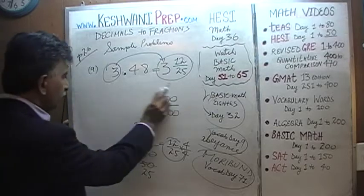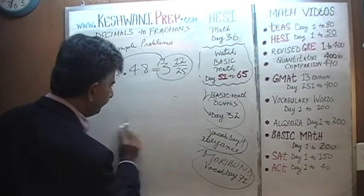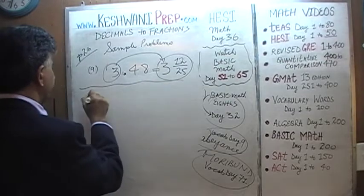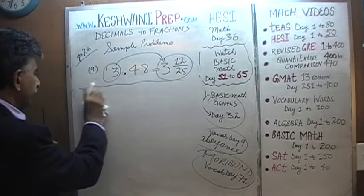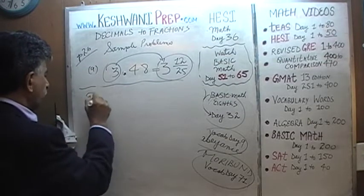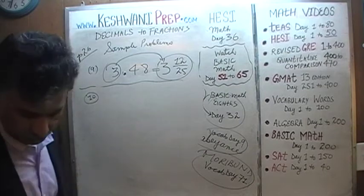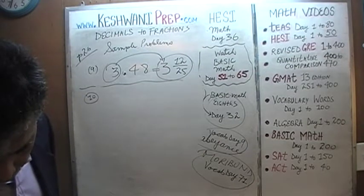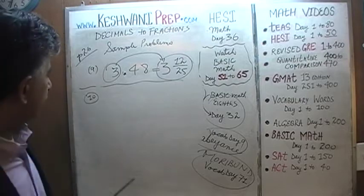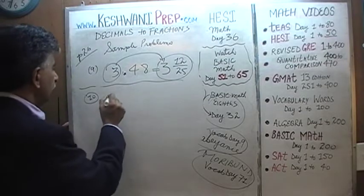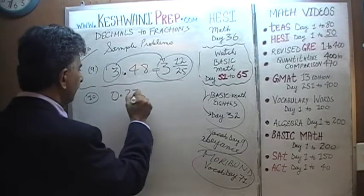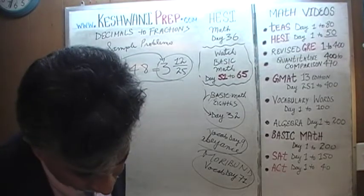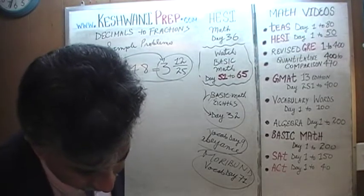Let's do the very last one — number 10. We have 0.275. That's all we have — 0.275.